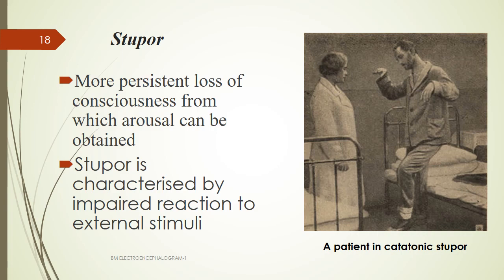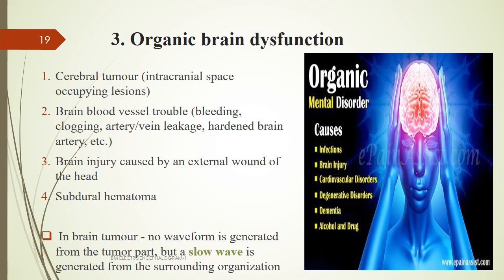The third application is organic brain dysfunction, which can be detected by EEG. Cerebral tumors or intracranial space-occupying lesions, brain blood vessel trauma such as bleeding, clotting, artery or vein leakage, and hardened brain arteries can be detected. Brain injury from external wounds or subdural hematoma can also be identified. In a brain tumor, no waveform is generated from the tumor itself, but a slow wave is generated from the surrounding tissue, enabling diagnosis.